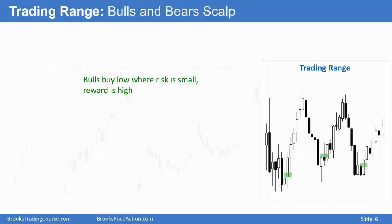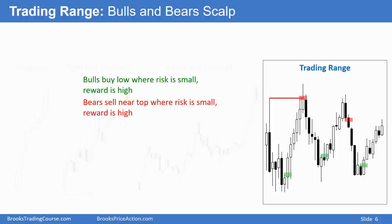Bulls buy a reversal up in the bottom third, and bears sell a reversal down in the top third, or they sell a breakout betting that breakouts will fail. In the trading range, 80% of breakout attempts fail. Each one of these legs is an attempt at a breakout — an attempt at a bear breakout, a bull breakout. Markets have inertia and they typically continue what they've been doing 80% of the time. So you just look to the left to see what the market has been doing — if it's been going up and down, it's a trading range.